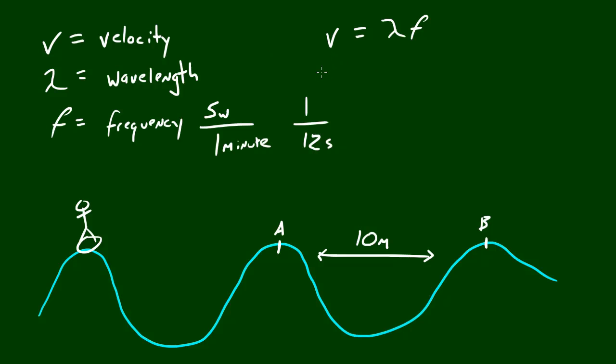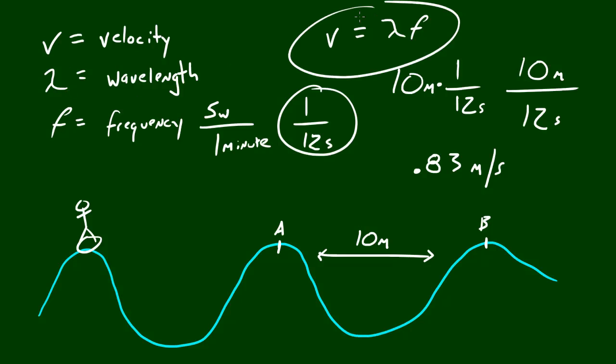So let's go ahead and make some calculations. In order to find the velocity, go ahead and take the wavelength, which is 10 meters, and multiply it by the frequency, which is 1 over 12 seconds. So 1 wave comes every 12 seconds. Now whenever you multiply this, you're going to get 10 meters over 12 seconds. So of course, what this would mean is the velocity for these waves right here is 10 meters over 12 seconds, or 0.83 meters per second.